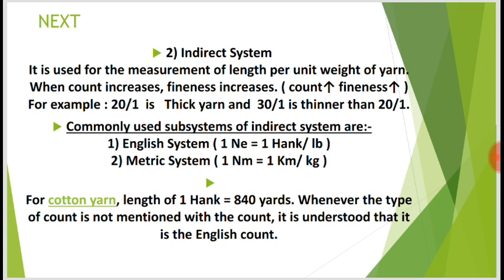Metric system: one Nm equals one kilometer per kilogram. For cotton yarn, the length of one hank equals 840 yards. Whenever the type of count is not mentioned with the count value, it is understood that it is the English count.